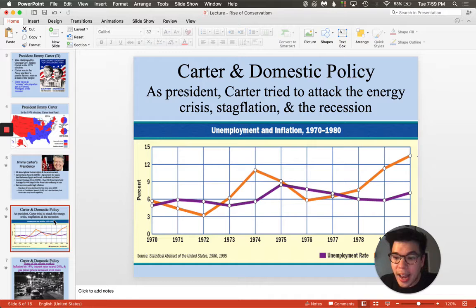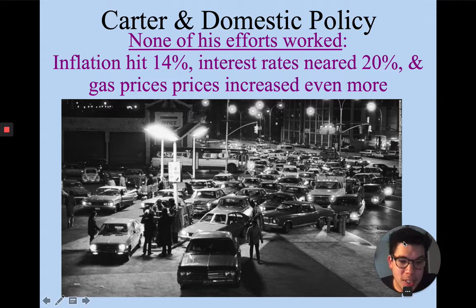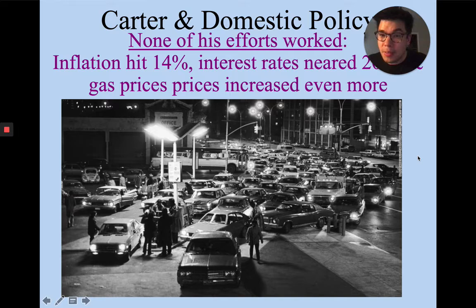Looking at how Carter approached these problems as president, the data shows he wasn't very effective. He tried to attack the energy crisis and stagflation, but inflation hit 14%, interest rates soared, people couldn't get loans, and gas prices increased so much that long lines just to get a tank of gas were pretty common throughout the 70s. This opens Carter up to a defeat — just like Ford was defeated by Carter — by a man named Ronald Reagan.